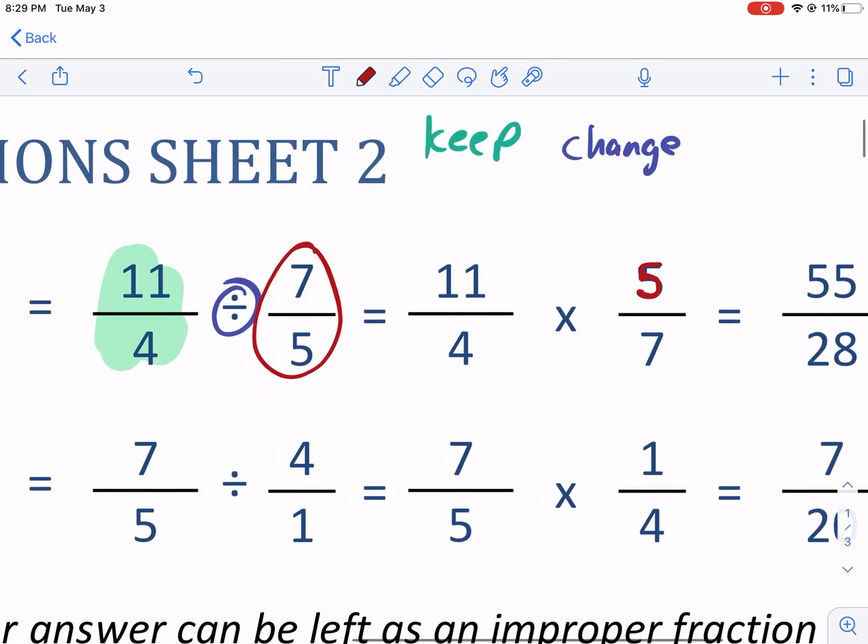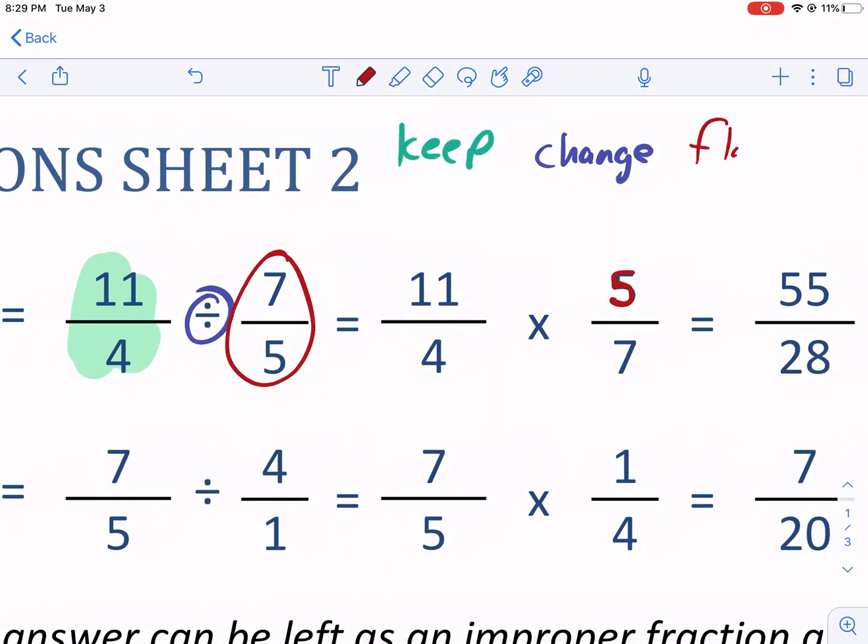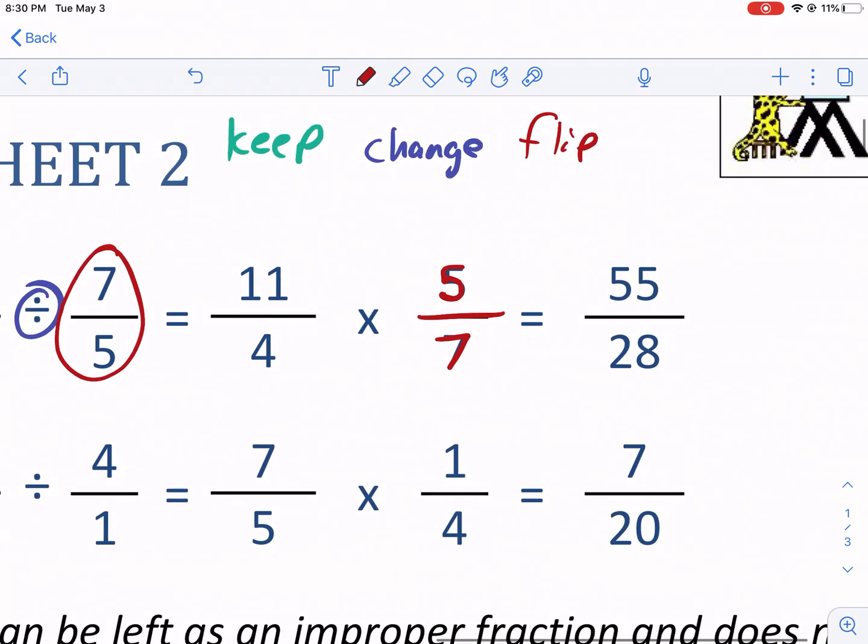So we change it. Keep change, sorry, we flip it almost messed up to its reciprocal. Why do we do that? Because multiplying by the reciprocal is the same thing as dividing. For example, if you divide by two, it's the same thing as multiplying by one half, one half of something, same thing as dividing by two. And that's why. So we get 55 over 28 as our final answer.